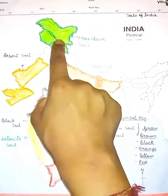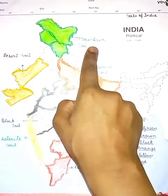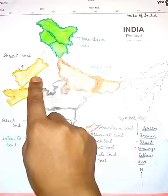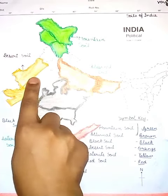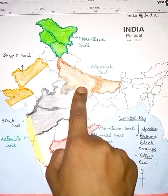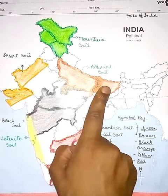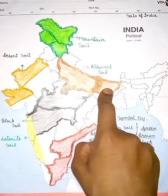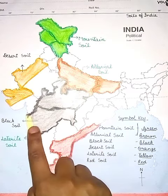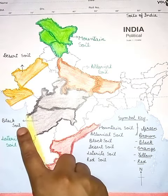In Jammu, Kashmir and Ladakh — mountain soil. In some parts of Rajasthan and Gujarat — desert soil. In Uttar Pradesh and Bihar — alluvial soil.